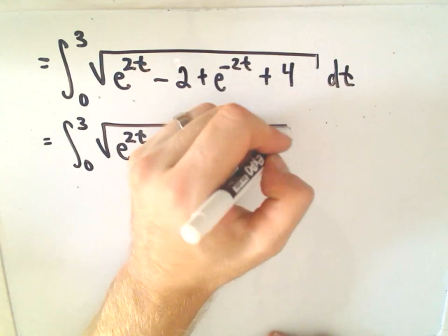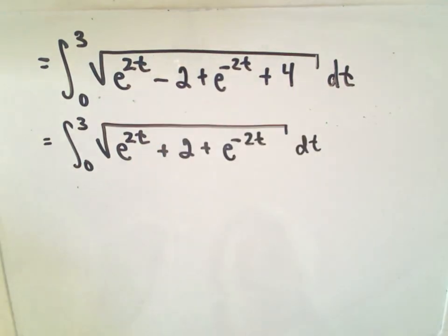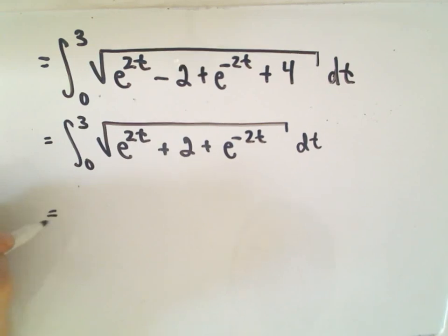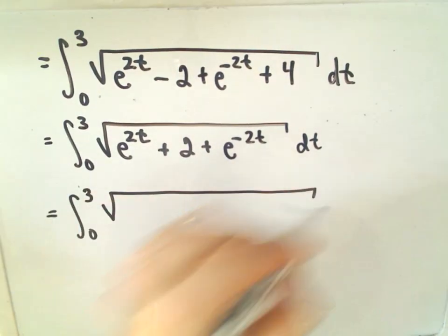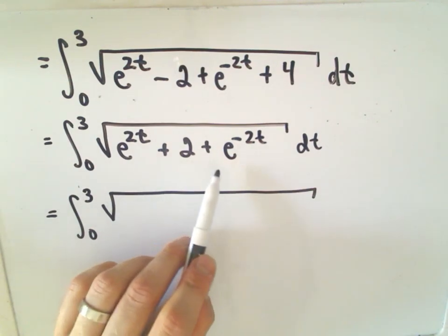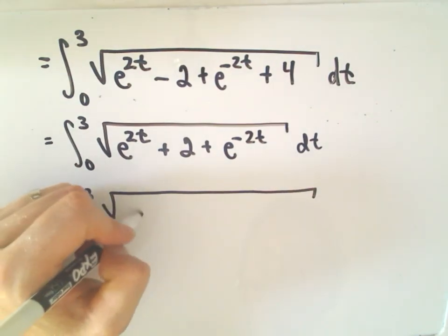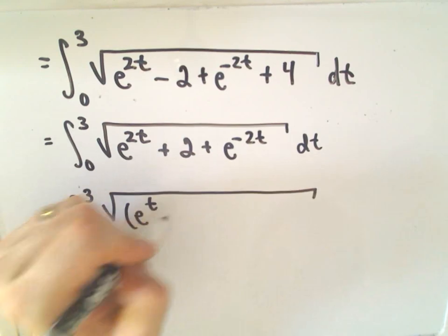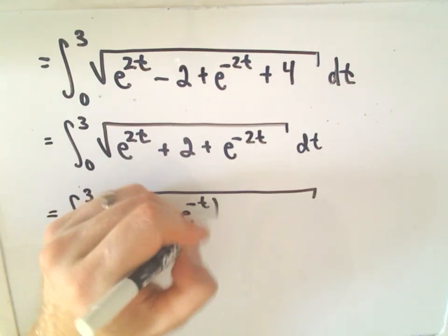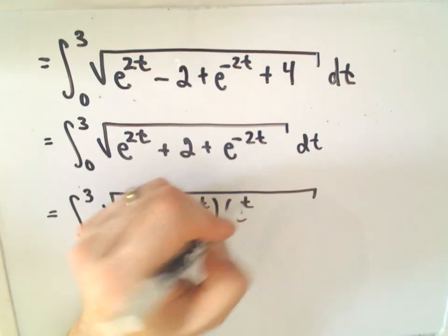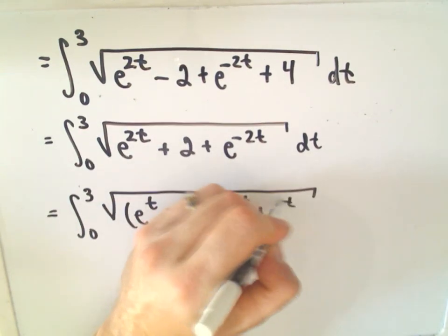And again, you know, maybe you think about u substitutions or something else here. The trick here is to simply factor this. Notice that we can actually write e to the 2t plus 2, plus e to the negative 2t as e to the t, plus e to the negative t, times e to the t, plus e to the negative t.